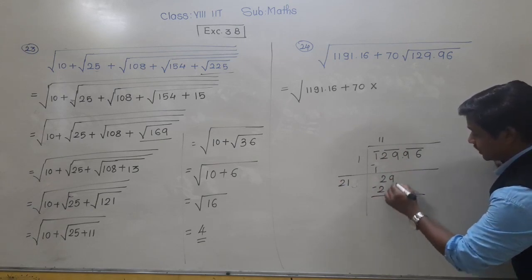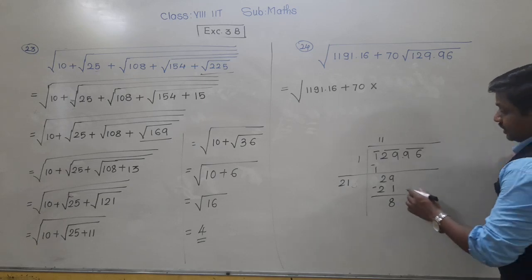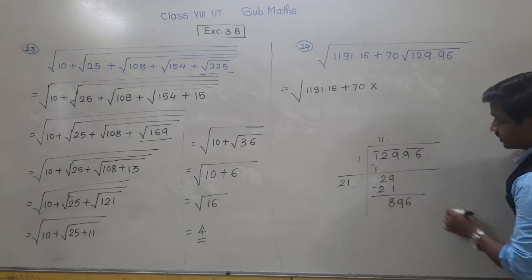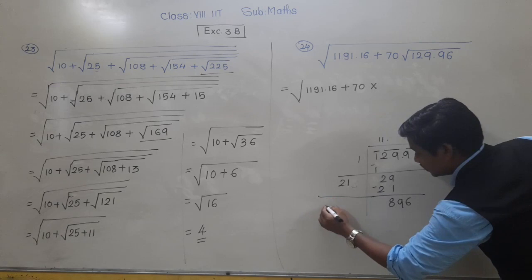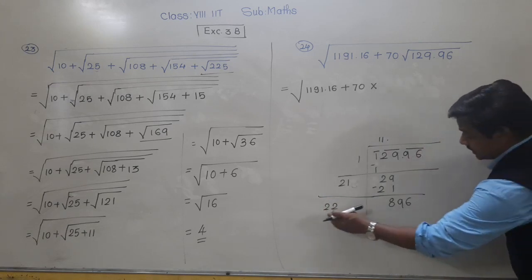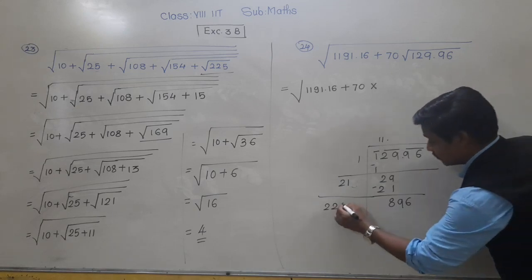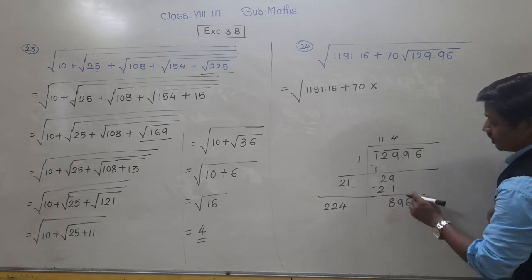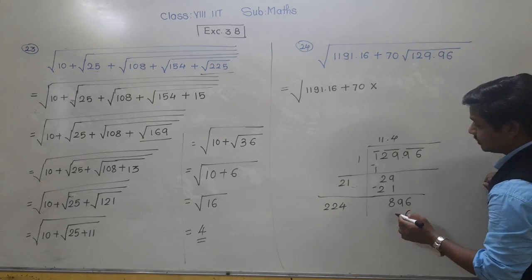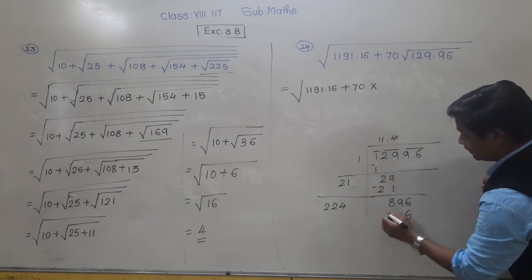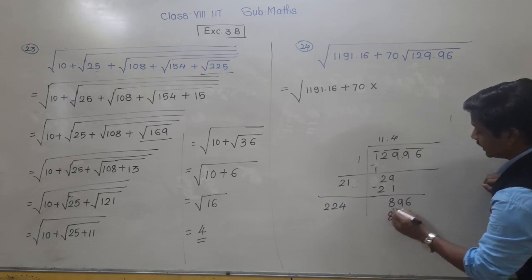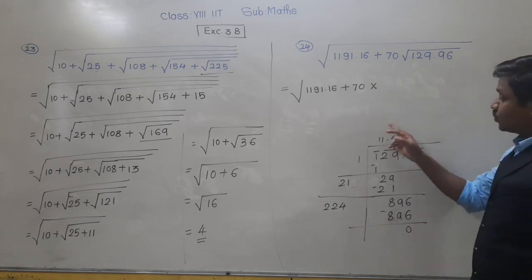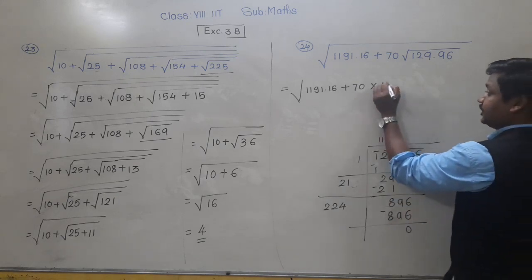There is a decimal point, so put the decimal point in the quotient. Bring 96 down: 891 divided by 22. Twenty-two fours are 88. So right here, 4. Calculating: 4 fours are 16, carry 1; 2 fours are 8 plus 1 is 9; 2 fours are 8 — remainder 0. Therefore, the square root of 129.96 is 11.4.